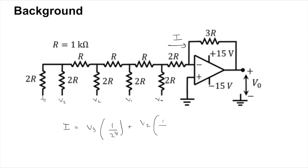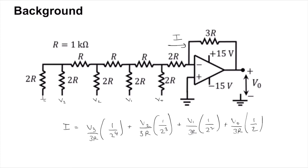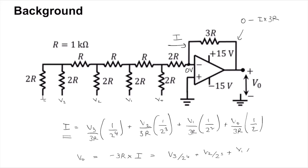So the total current i = v3 / 3R × (1/2)^4 + v2 / 3R × (1/2)^3 + v1 / 3R × (1/2)^2 + v0 / 3R × (1/2). The voltage at the inverting input is 0V, so V_out = 0 − i × 3R = −3R × i, which simplifies to: V_out = −[ v3/16 + v2/8 + v1/4 + v0/2 ].